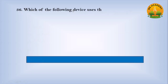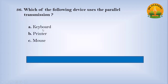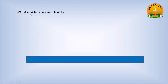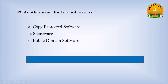Which of the following devices uses parallel transmission? Option A Keyboard, option B Printer, option C Mouse. Answer: B. Number Printer. Another name for free software is. Option A Copy protected software, option B Shareware, option C Public domain software. Answer: C. Number Public domain software.